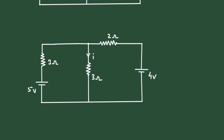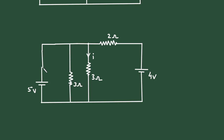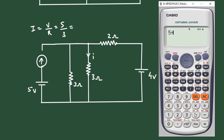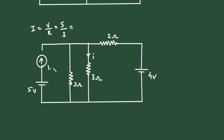Solution: When we convert a voltage source, this resistor will be in parallel — it will be like this. The resistance value will remain the same, that is 3 Ohm. We can erase this resistor now. This voltage source will be turned into a current source, and its direction will be according to its polarity — upward, because positive is here and negative is here. Current I is equal to V divided by R. The voltage value is 5 and resistance is 3, so it will be 5 divided by 3, which is 1.6 Ampere.